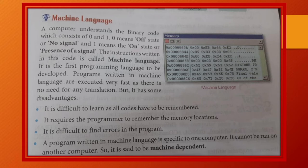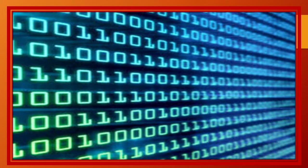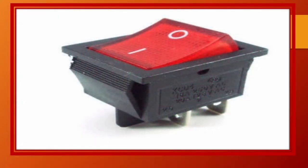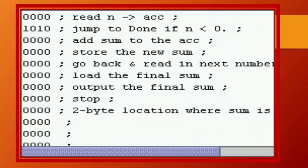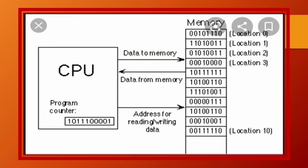Machine language. A computer understands the binary code which consists of 0 and 1. 0 means off state or no signal and 1 means the on state or presence of a signal. The instruction written in the code is called machine language. Means, jab hum program ko 0 aur 1 ki form mein likhte hain, usse machine language kaha jata hai. It is a first programming language to be developed. Programs written in machine language are executed very fast as there is no need for any translation. Means, computer 0 and 1 ki language ko bohut jaldi samajh jata hai. Isse machine language ko run karne ke liye kisi translator ki zarurat nahi padti.